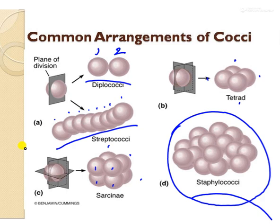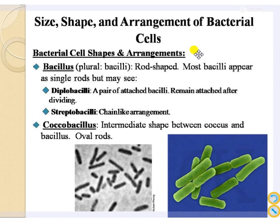When we say 'coccus,' the shape of the bacteria is spherical. Another class of bacteria is bacillus. A single cell is called bacillus; multiple attached cells are bacilli. Bacilli are rod-shaped whereas cocci are spherical. Most bacilli appear as single rods but may also appear as diplobacilli — two bacilli attached together — or streptobacilli, which are chain-like arrangements of bacilli.